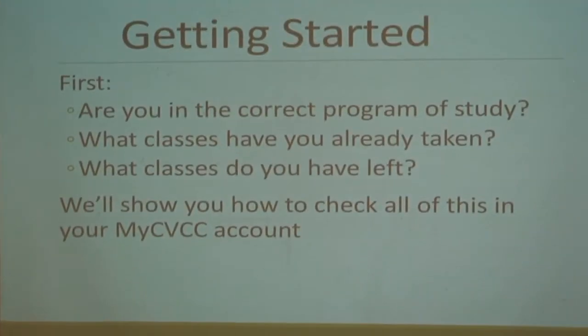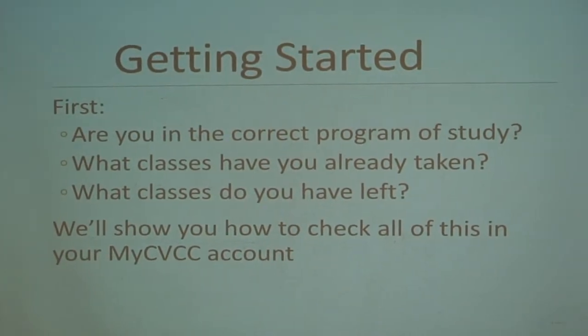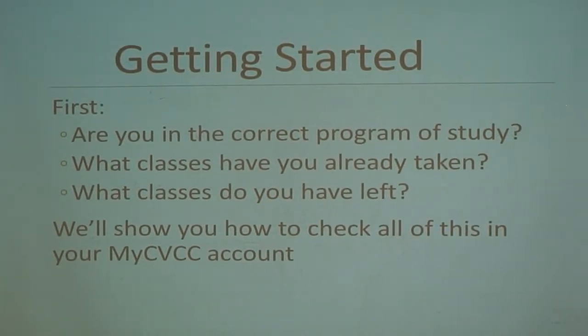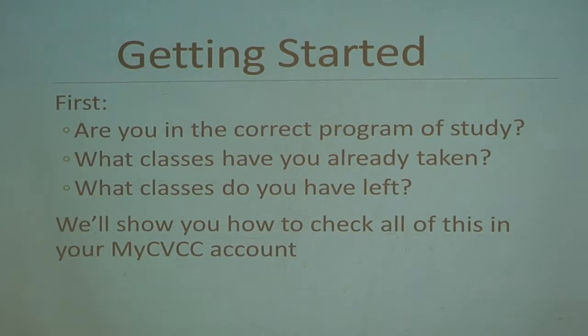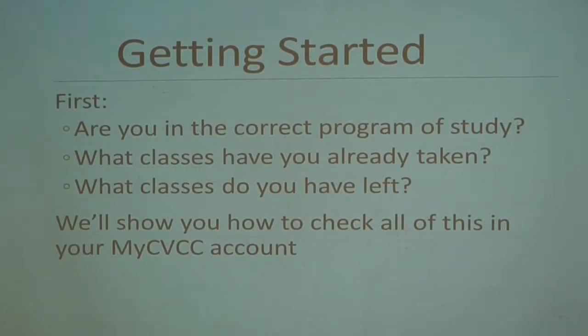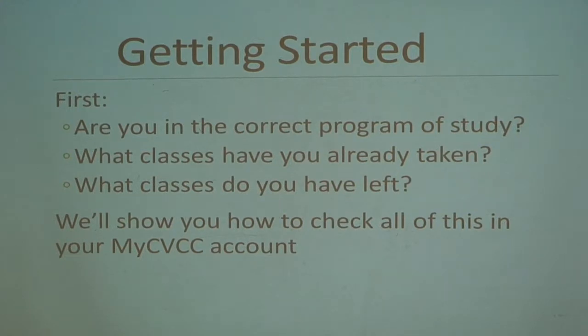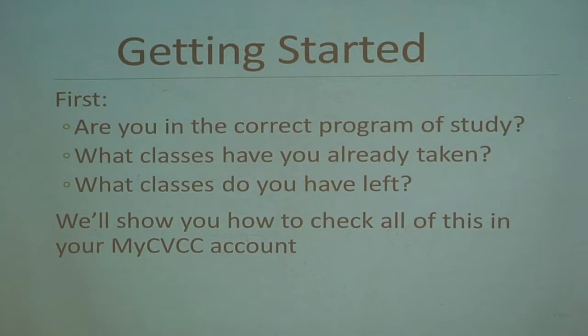We're going to go through and give you some instructions on how to do some of these things, and then we'll have something more hands-on afterwards going through and looking at your degree progress report. So getting started — when you first come in to meet with a counselor, and you can do this yourself also, we want to make sure you're in the right plan of study. You may be working towards a degree in science, but you're actually enrolled in general studies or something of that nature. We want to make sure that the computer system actually reflects the plan that you're in. That's the first thing we check, and I'll show you all how to check that in this presentation.